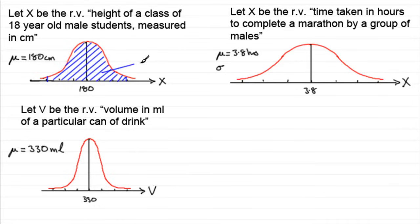So that would mean that if say the standard deviation for our runners was 0.5 hours, then this would be 3.8 plus 0.5, that would be 4.3. Then if we add another 0.5, that's going to be 4.8, and this would be 5.3.